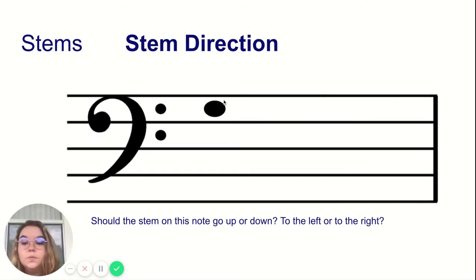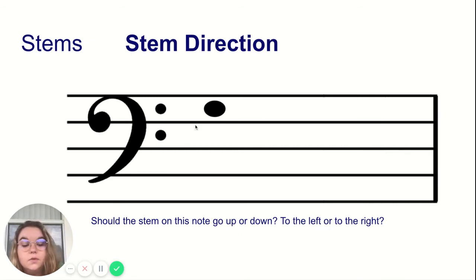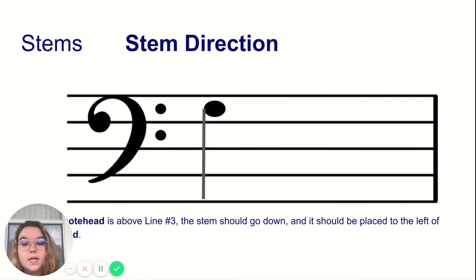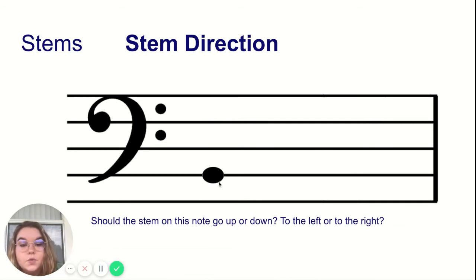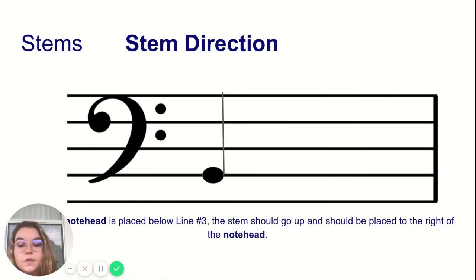Keeping that in mind, should this stem on this note go up or down, to the left or to the right? If the rule is that if it's above line three the stem goes down, and if it's below the stem goes up, then this stem should go down, which means it goes on the left side of the note head. This note, which is on line two — following that same logic, since it is below line three, it should go up. And since it is going upwards, it is placed to the right of the note head.